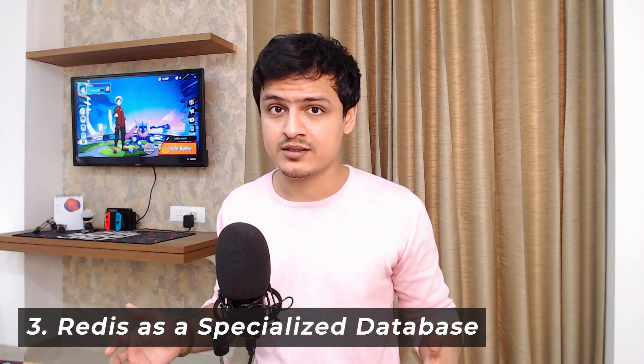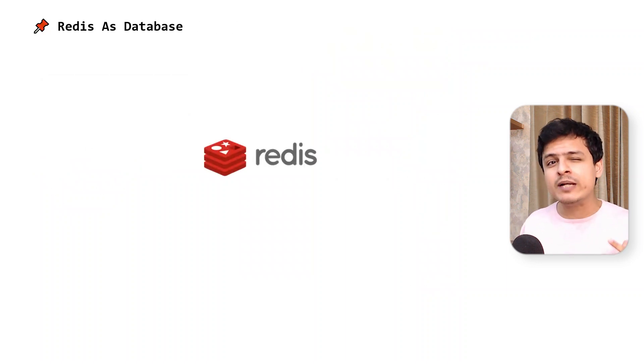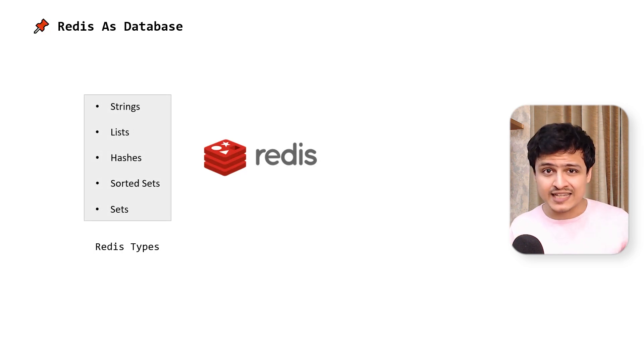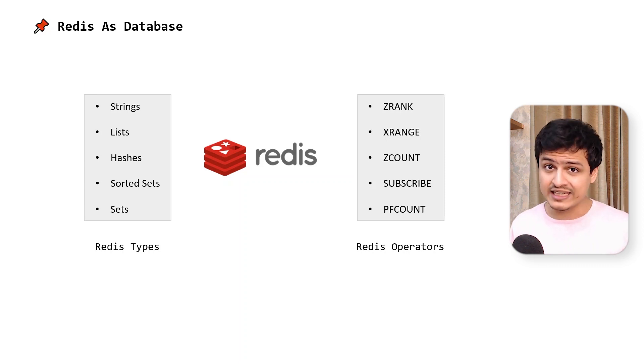The last thing I've got for you is using Redis as a database. To be clear, Redis cannot replace your primary database. Just like with messaging, Redis is a use-case-specific database. Redis has got extremely rich data types like sorted sets and intelligent operators like Z-Rank, which makes modeling complex patterns relatively easy.